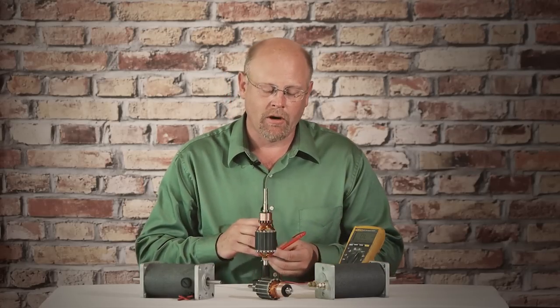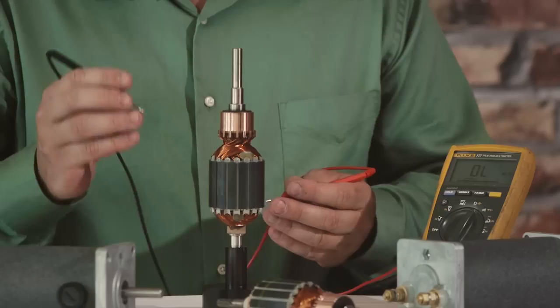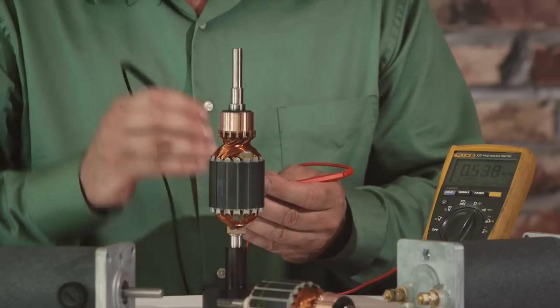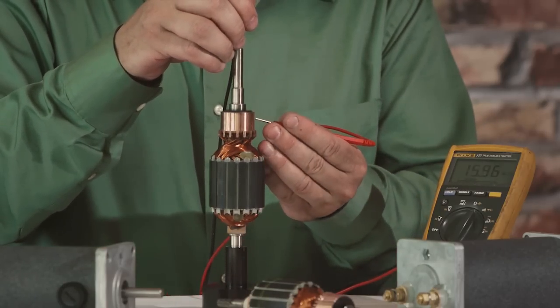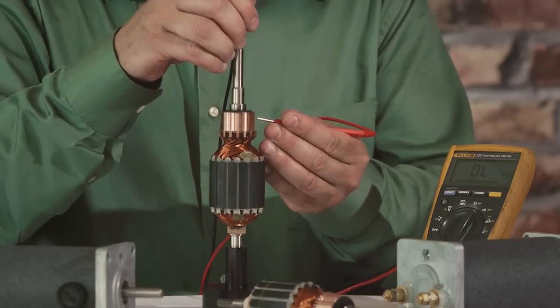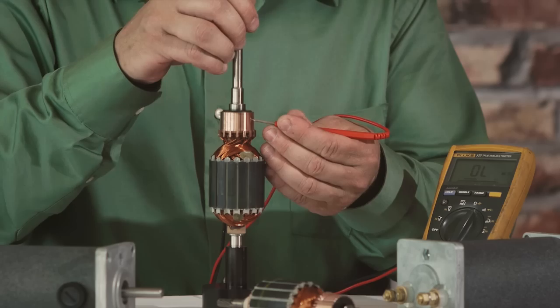The last test is the bar-to-ground test. In this test, we're measuring the resistance of every bar to ground, in this case the armature shaft. And we never want to have continuity between any of the bars and ground. It's always supposed to be open circuit.